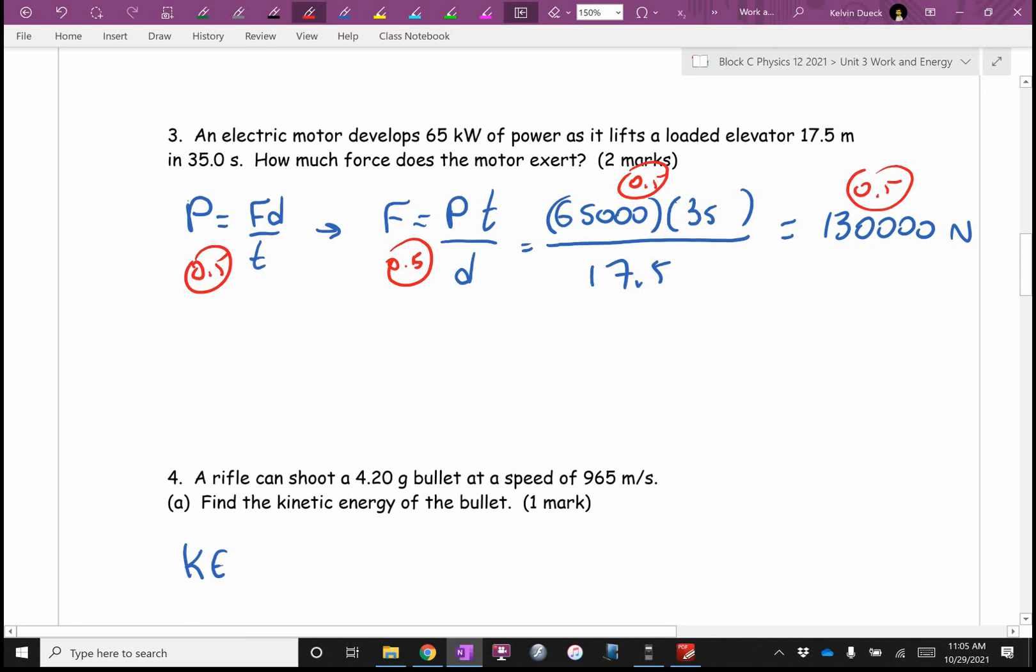Yeah, I just did it one step. In other words, you found this number and then you said W equals Fd, so you would have multiplied power by time, gotten an answer, and divided it by d. I just did it in one step.